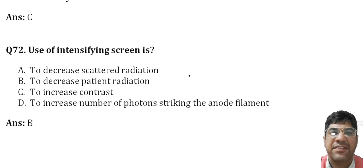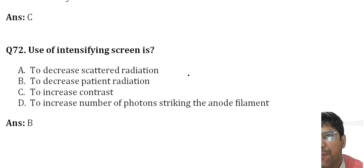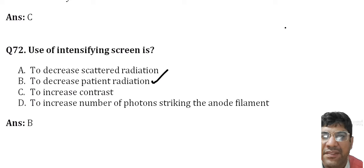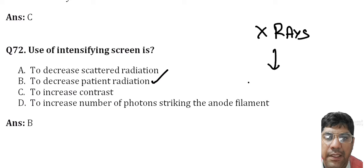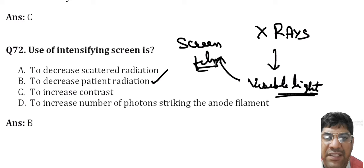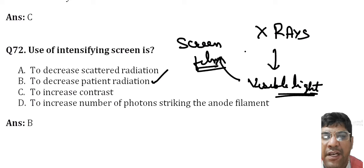The use of intensifying screens is to decrease patient radiation. Intensifying screens are devices that convert X-rays into visible light, and this visible light in turn exposes the screen film. By using intensifying screens, less X-ray radiation is needed to create the image, hence reducing radiation exposure to the patient.